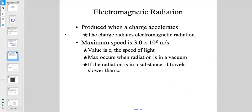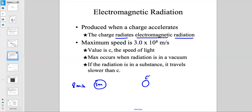Electromagnetic radiation is produced when a charge accelerates and oscillates. It radiates at the speed of light: 3×10⁸ meters per second. This speed is incredible — it takes only about eight minutes for light from the sun to reach us, so we say the distance from the sun to Earth is about eight light minutes.